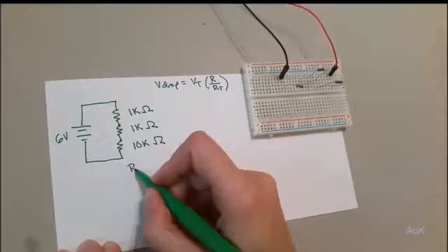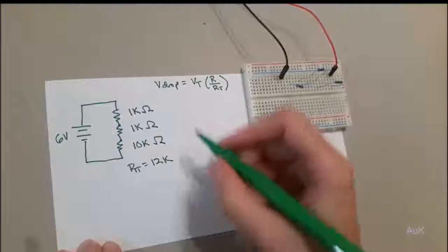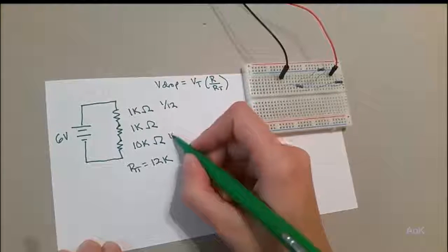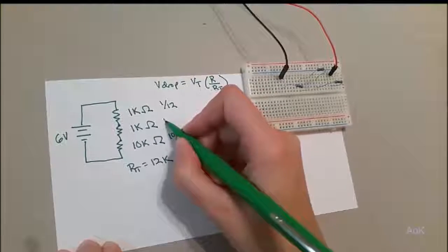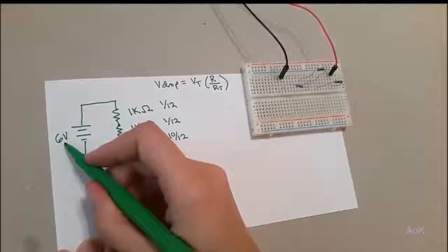Now our total resistance is 12k ohms. Let's find our ratio. This should be 1 over 12. This should be 10 over 12. This should also be 1 over 12. And we multiply it by our original 6 volts.